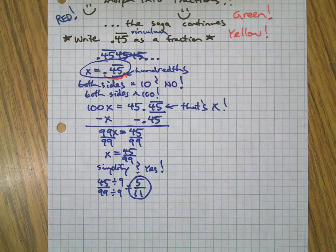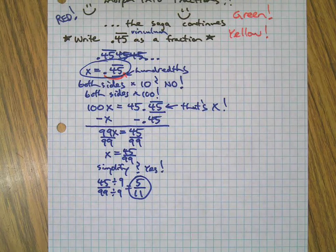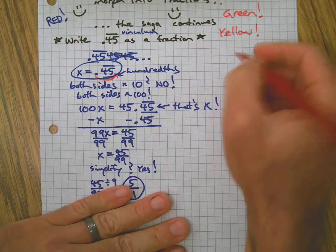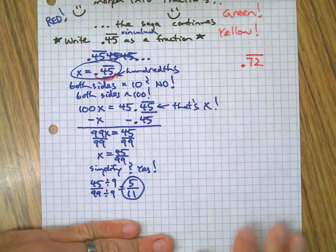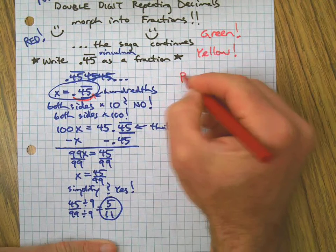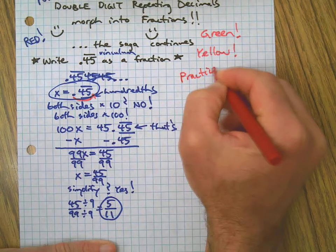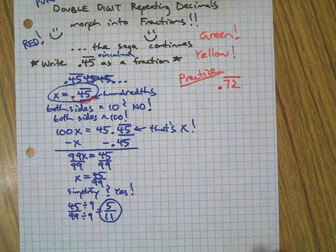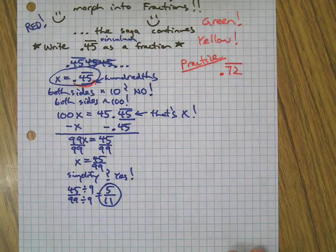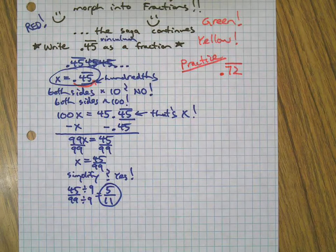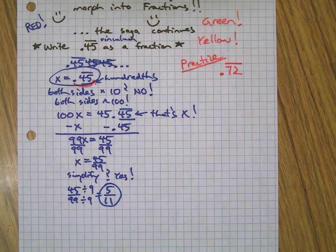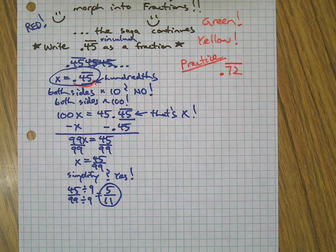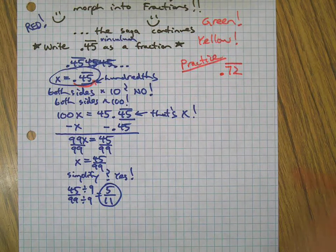Alright, so that's double digits. Let's give you a practice one. Here, how about you do this one: 0.72 repeating. Okay, here's your practice problem. Pause the video, go ahead and do that using the example we just did and see what you come up with. I'll join you in a minute.